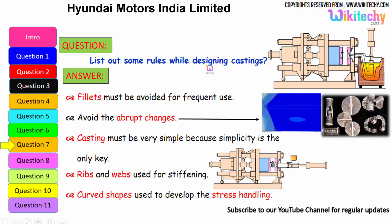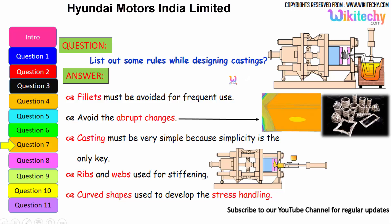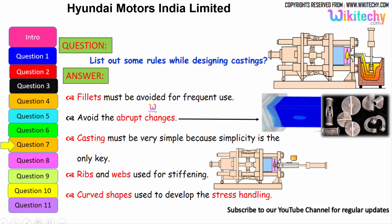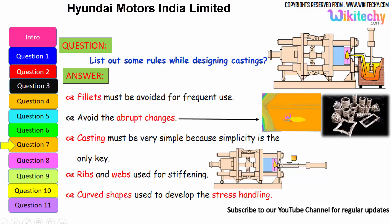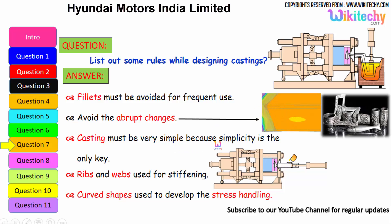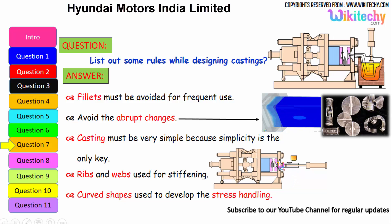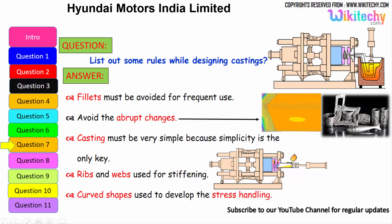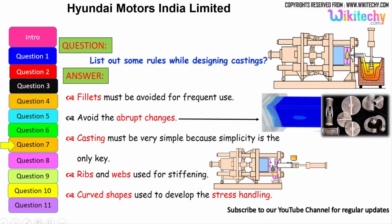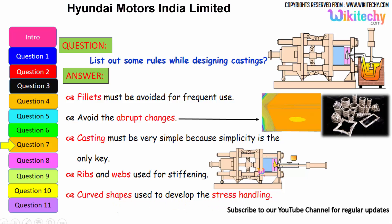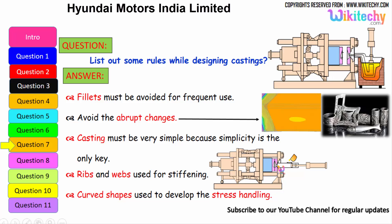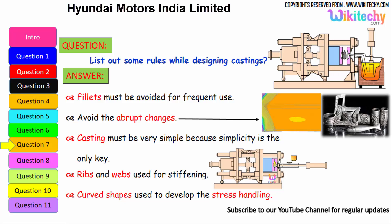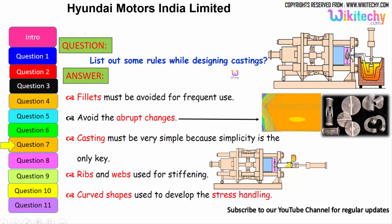Let us see some of the rules to follow while designing castings. Fillets must be avoided for frequent use. Avoid abrupt changes — shapes should not change suddenly. Castings must be kept very simple, because simplicity is the key. Ribs are used for stiffening. A curved shape should be used to develop stress handling and to avoid stress concentration.